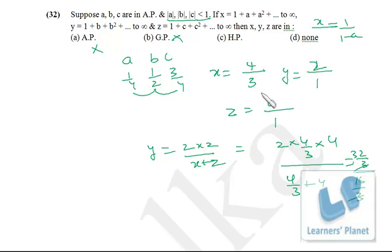So that means x, y, z are in HP. So very simply you can solve this problem if you take the comfortable values of a, b and c and keep in mind that a, b, c should be less than 1 because the common ratio of an infinite GP cannot be more than 1. I hope that's clear to you and it's really an important problem.